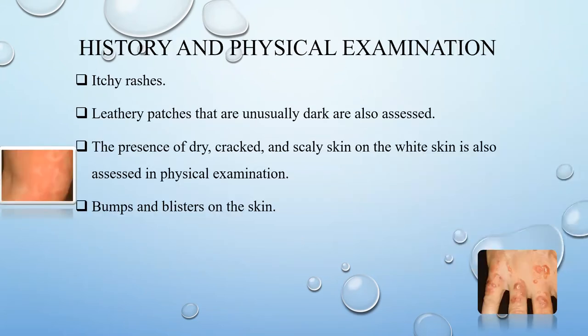In the history and physical examination, we can find itchy rashes. Leathery patches that are unusually dark are also assessed. The presence of dry, cracked, and scaly skin and white skin is also assessed in physical examination. We can also find bumps and blisters on the skin.